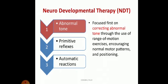First, NDT focuses on correcting abnormal tone through range of motion exercises, encouraging normal motor patterns, and positioning. To normalize tone, we use passive exercises: slow passive movement reduces tone (used for spasticity), and fast passive movement increases tone (used for hypotonicity/flaccidity).